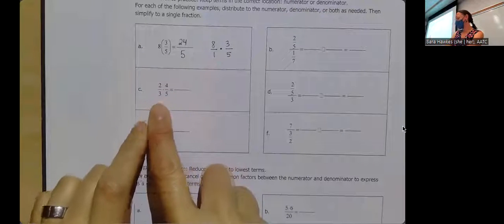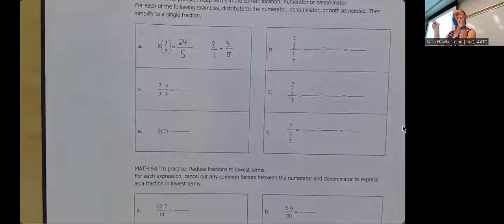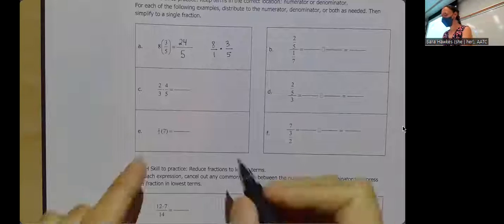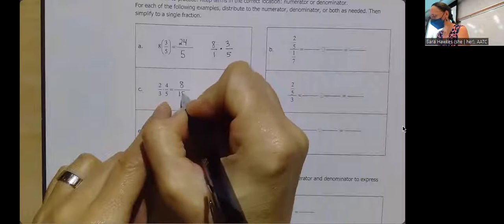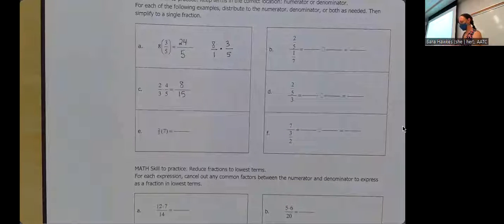Same kind of thing here. I've got two-thirds times four-fifths. The rule is that when I'm multiplying fractions, I'm multiplying straight across the top and straight across the bottom. Would anyone like a visual on why it works that way? I saw a couple of head nods, so I'm going to go ahead and write this out as eight-fifteenths really quick, and then switch gears to do my best at a visual.